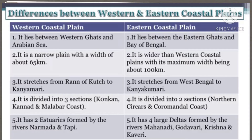The western coastal plain stretches from the Rann of Kutch to Kanyakumari. The eastern coastal plain stretches from West Bengal to Kanyakumari. The western coastal plain is divided into three sections: Konkan, Kannad, and Malabar.